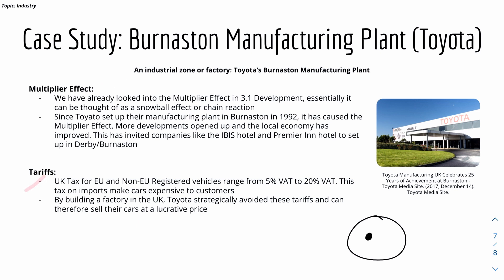For tariffs: the UK tax for EU and non-EU registered vehicles ranges from 5% to 20% VAT, and taxes on imports make cars expensive for customers. However, by building the Toyota manufacturing plant in Burnaston, Toyota avoided these tariffs and can sell their cars at a lower, more competitive price in the UK, which means sales will increase.